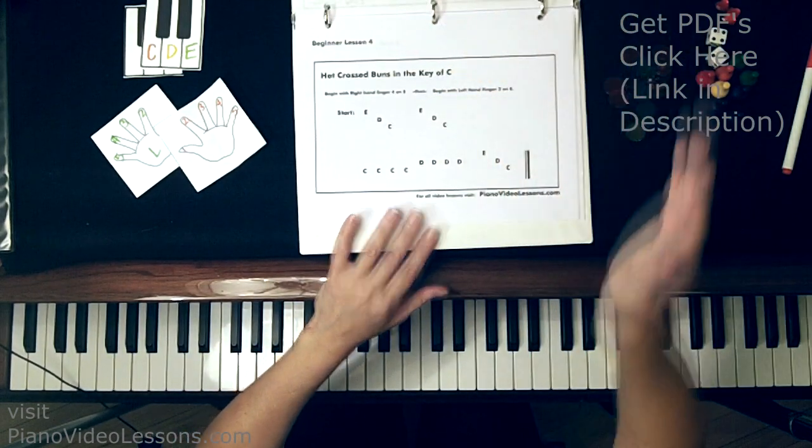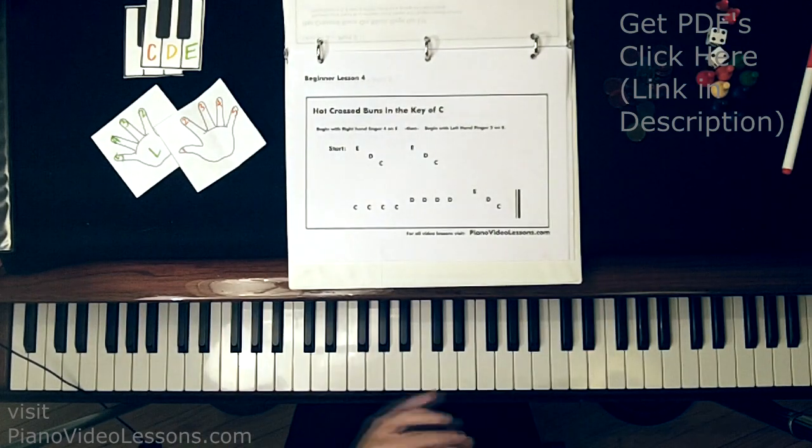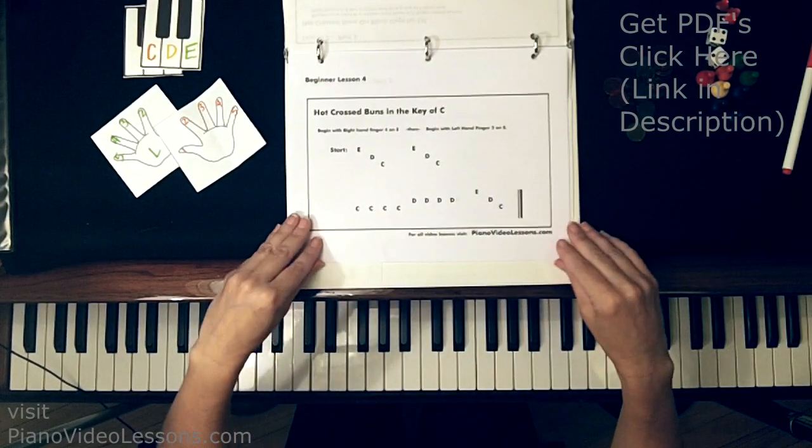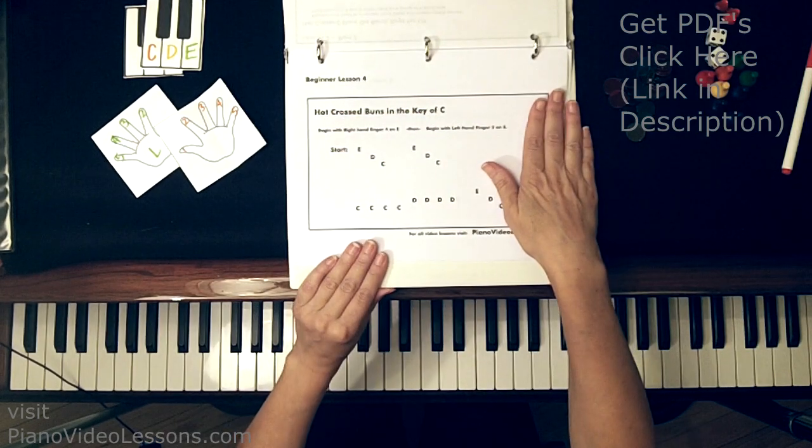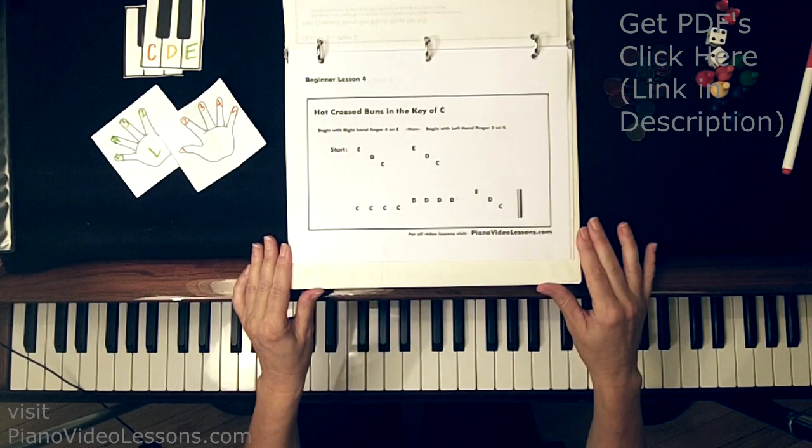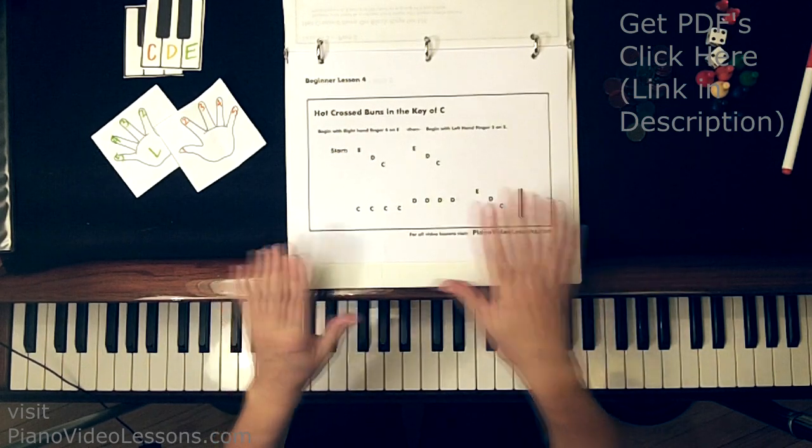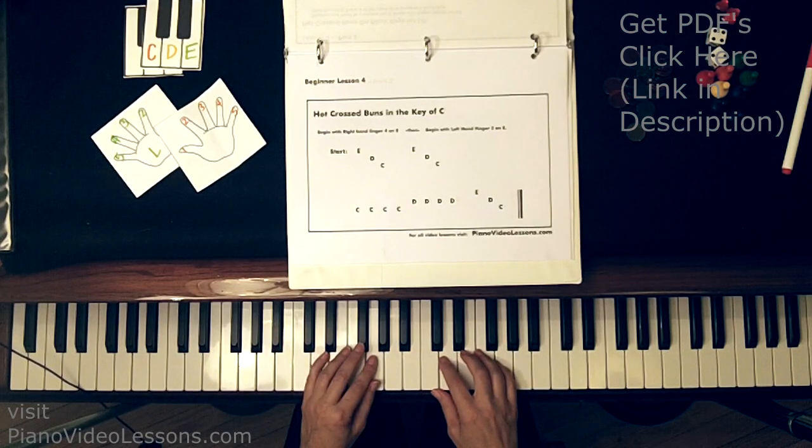And now we're on to lesson 4, where we're going to learn to play hot cross buns in two different keys. Starting off in the key of C, this information is available for print at PianoVideoLessons.com, and if you would like to just check the video description, you can get the link to the direct page for this, so that you can print out your own music. Alright, so let's get started.